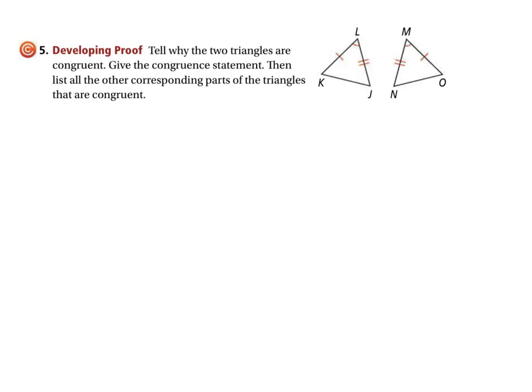Okay, tell why the two triangles are congruent and then give the congruent statement, meaning write the names of the triangles with all the vertices in the correct order and then list all of the other corresponding parts.